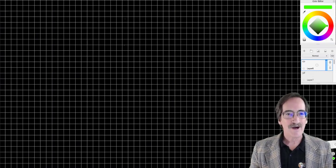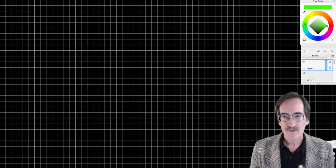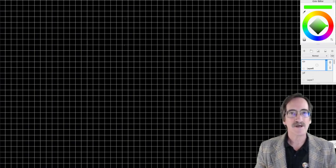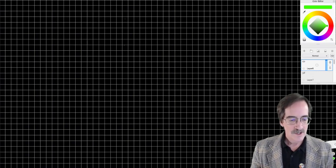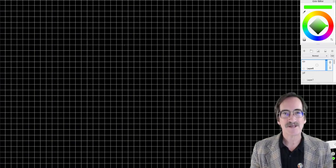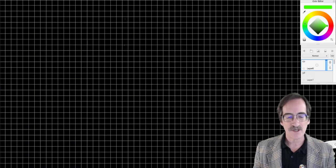All right, this is Precalculus B, Unit 3, Lesson 4, Law of Sines. We're going to continue using the Law of Sines and the Law of Cosines, which you're going to learn about in the next lesson, to solve non-right triangles.